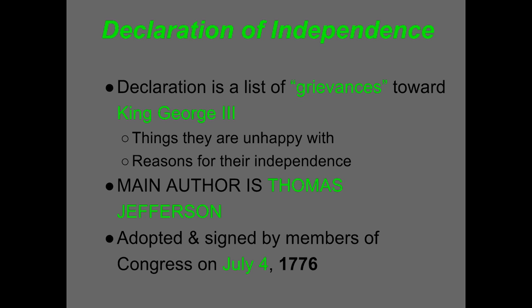The Declaration of Independence is also a list of the things that King George III was doing wrong — a list of grievances, things they were unhappy about — as reasons for their independence. The main author is Thomas Jefferson, and it was adopted and signed by members of Congress on July 4th, 1776. That's why it's considered our nation's birthday, and this was the first real step towards breaking away from Britain.